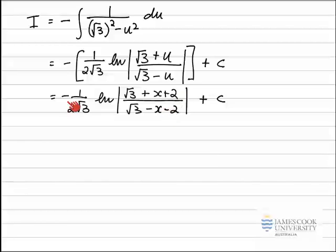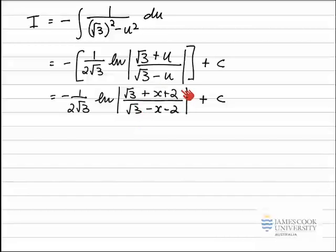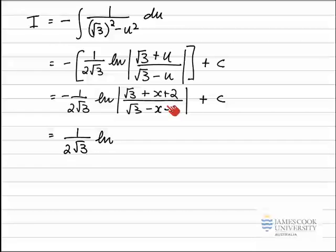We can neaten this up a little bit, particularly the minus sign in the front. Usually with a log, you don't want to see a negative coefficient in front, so we use the power law. The negative in front here can come inside the log as a power — so this whole fraction is raised to the power of minus 1. That's the minus 1 that's in front as a coefficient; it comes inside the log and whatever's inside the log is raised to the power of minus 1. If this is a fraction, raised to the power of minus 1 means we just take the reciprocal.